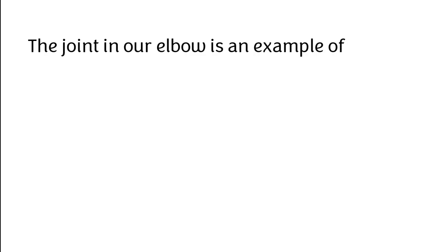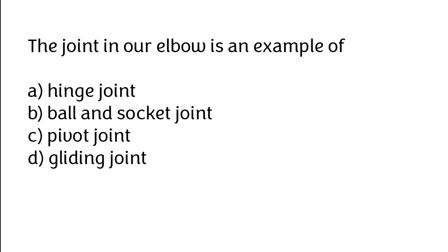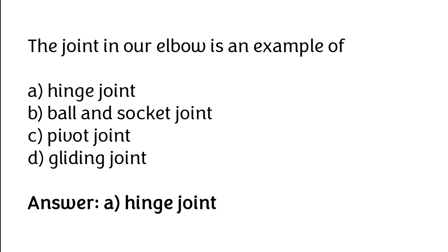The joint in our elbow is an example of: hinge joint, ball and socket joint, pivot joint, or gliding joint. The correct answer is option A: the joint in our elbow is an example of a hinge joint.